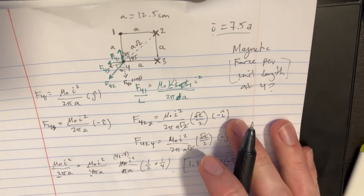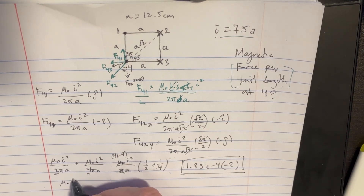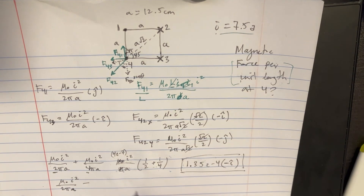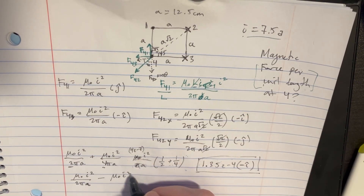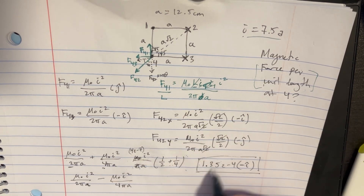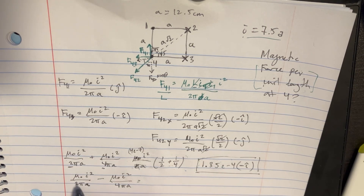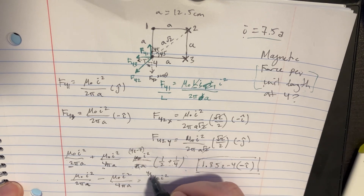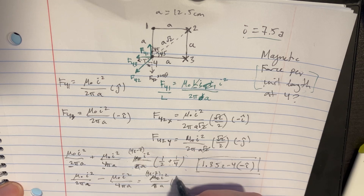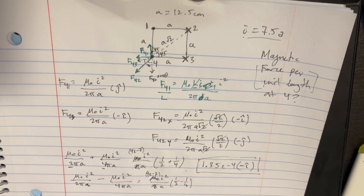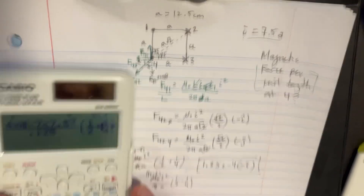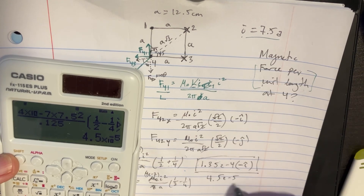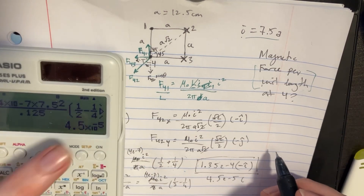Now adding the J-direction components. One is positive and one is negative, so: mu naught I squared over 2 pi A minus mu naught I squared over 4 pi A. Pulling out common factors gives mu naught I squared over pi A times one-half minus one-fourth. Using the same calculator values as before but with minus instead of plus, we get 4.5e-5 in the positive J direction.